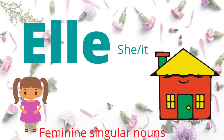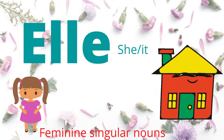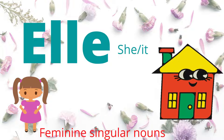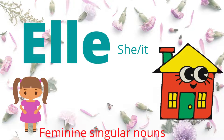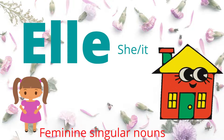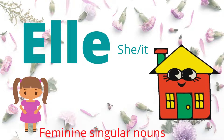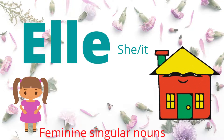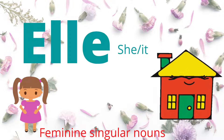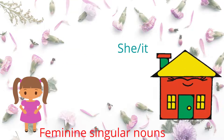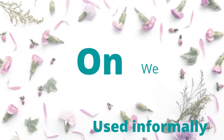Next: Elle. Elle means she or it — for feminine singular nouns. For example, 'maison' — maison is 'house' in French. Maison is feminine, so if I want to replace maison, I replace it with Elle.